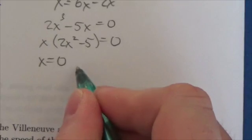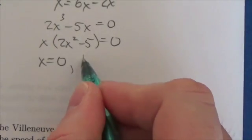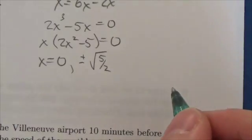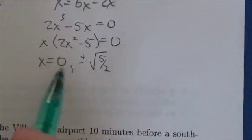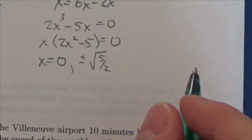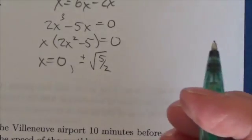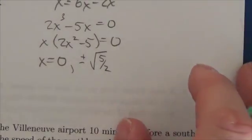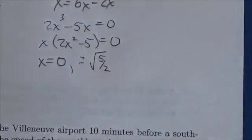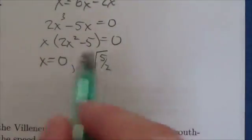Okay, and so now our two solutions here are going to be x is equal to zero or x is equal to the positive or negative square root of five halves. Now we had just talked about the fact that x can't equal zero there. Now it turns out that it really can, however you're going to get a vertical line.